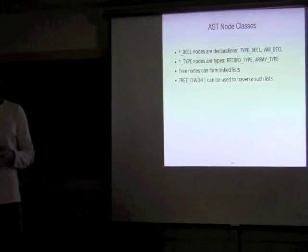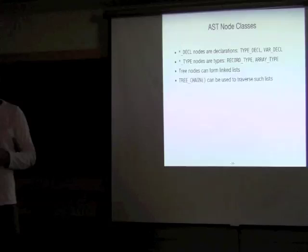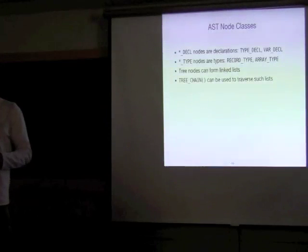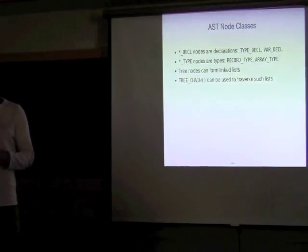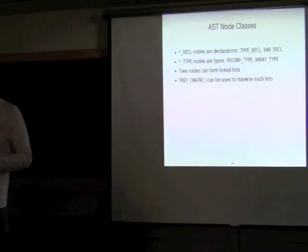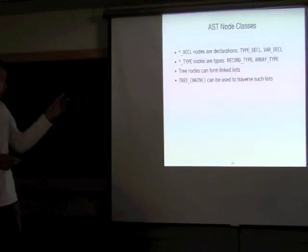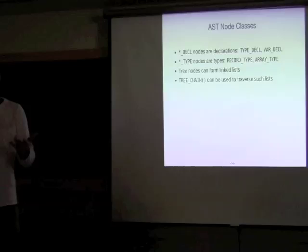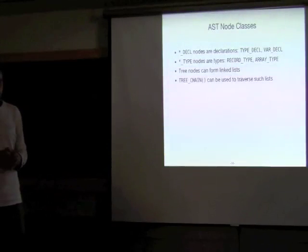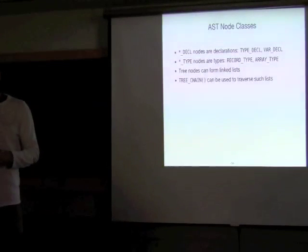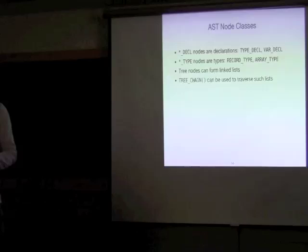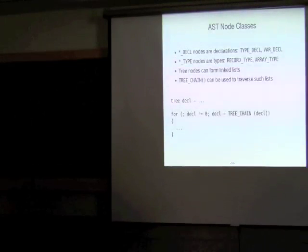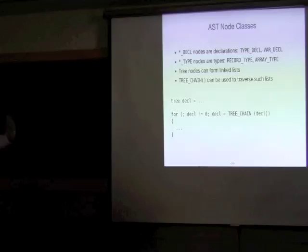There are two major categories of tree nodes in GCC AST: declaration nodes such as TYPE_DECL and VAR_DECL, and type nodes such as RECORD_TYPE or ARRAY_TYPE. In GCC AST, 'record' refers to a struct or class type. Tree nodes can also form linked lists and we can use the TREE_CHAIN macro to traverse such lists. This is a fairly common piece of code when working with GCC AST.